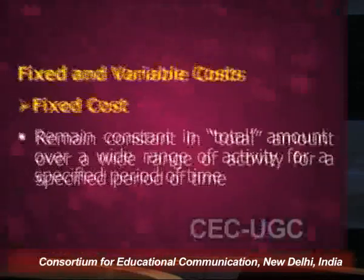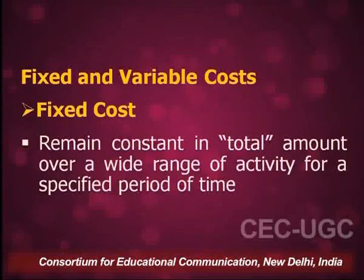Another important classification is fixed cost, variable cost, and semi-variable cost. Direct cost is that which can be directly attributable to a particular cost center, cost unit, or cost object. Indirect cost is that which cannot be directly assigned but has to be distributed.